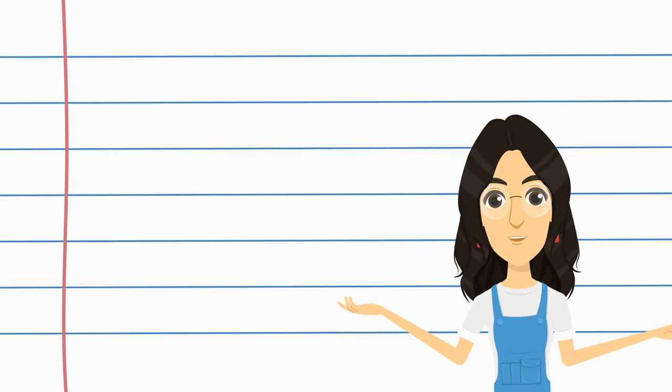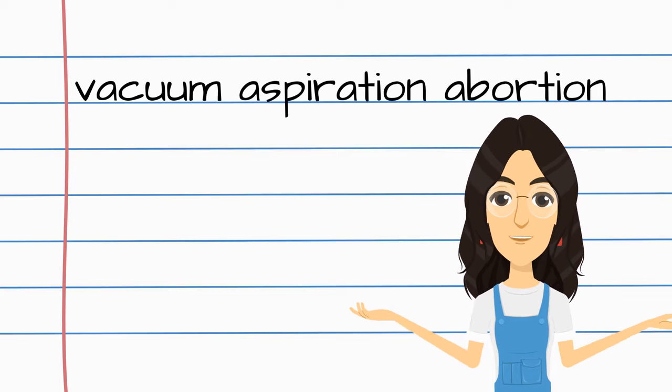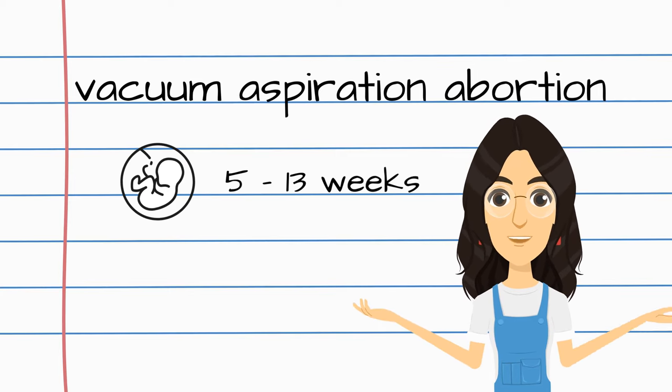In this video, we will discuss vacuum aspiration abortions. This method of abortion is done in the first trimester, between 5 and 13 weeks.